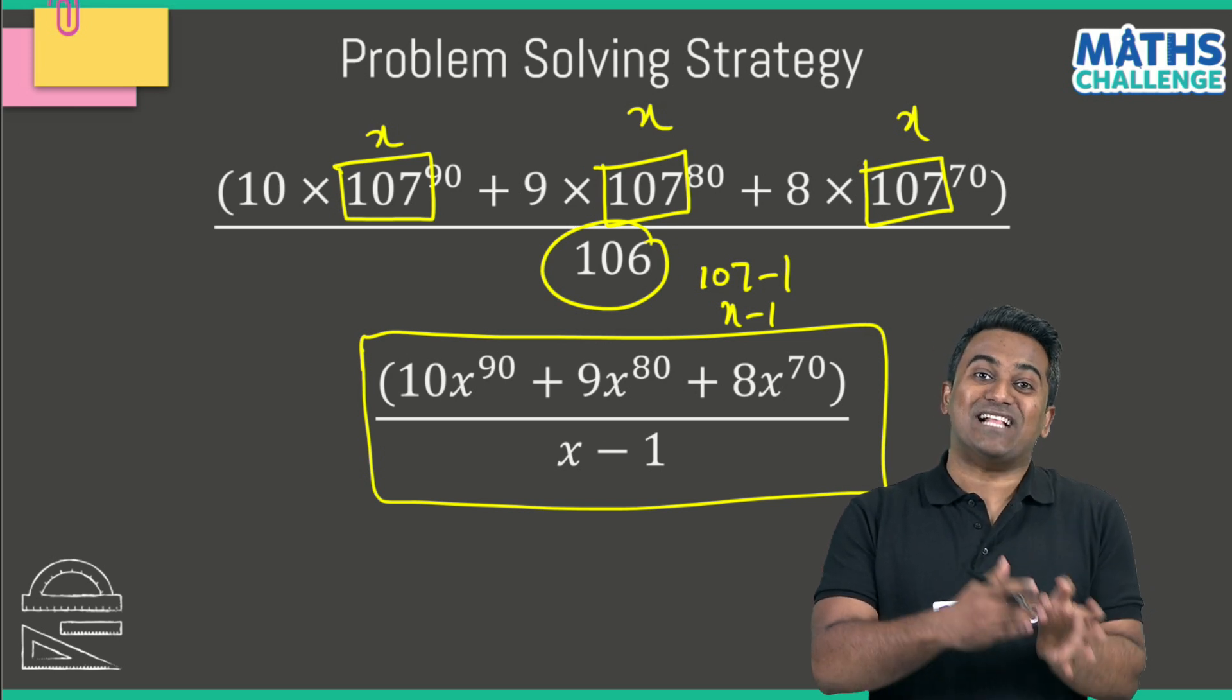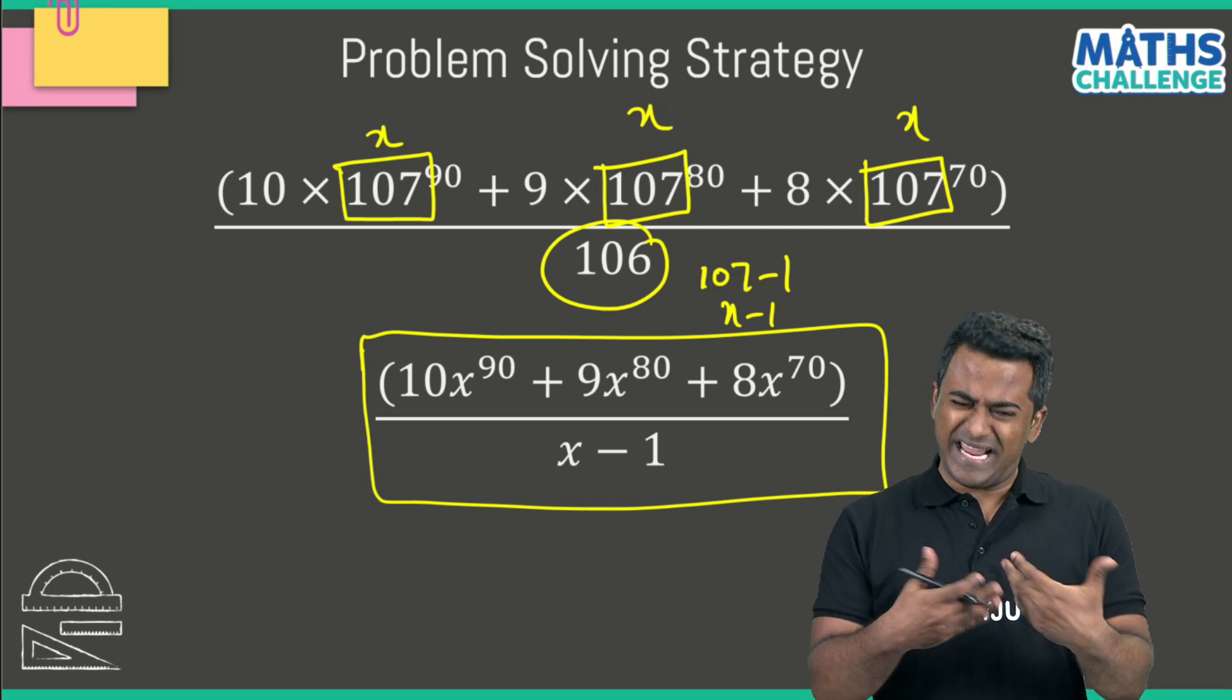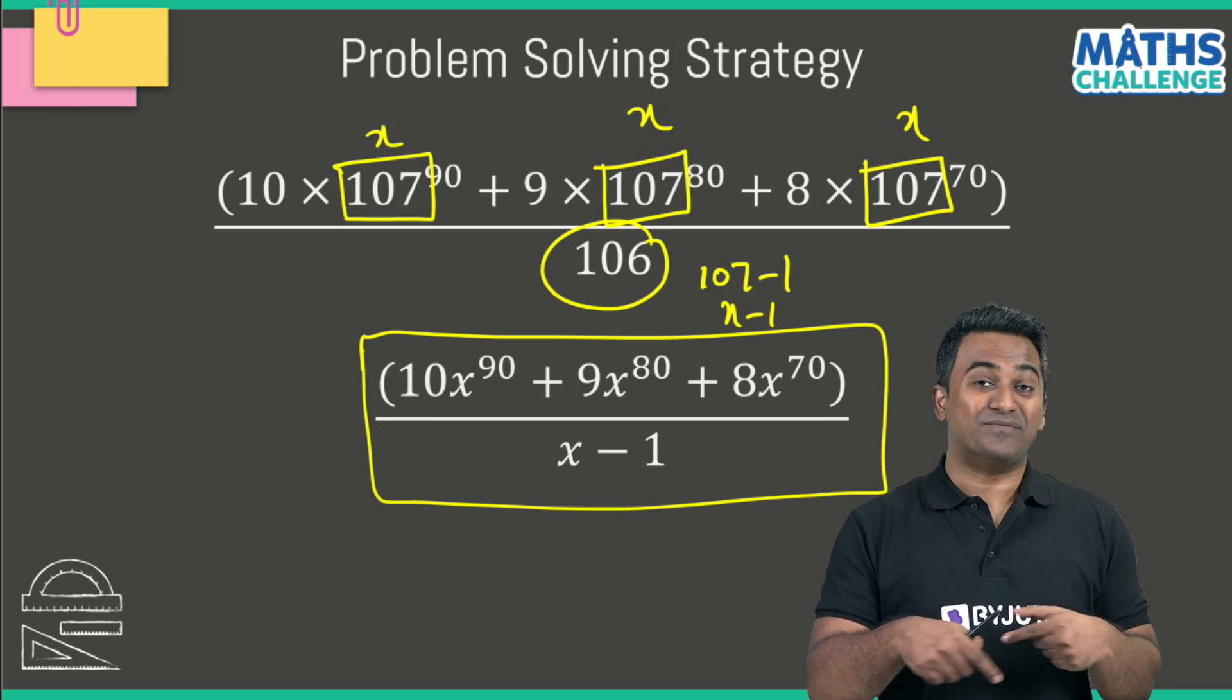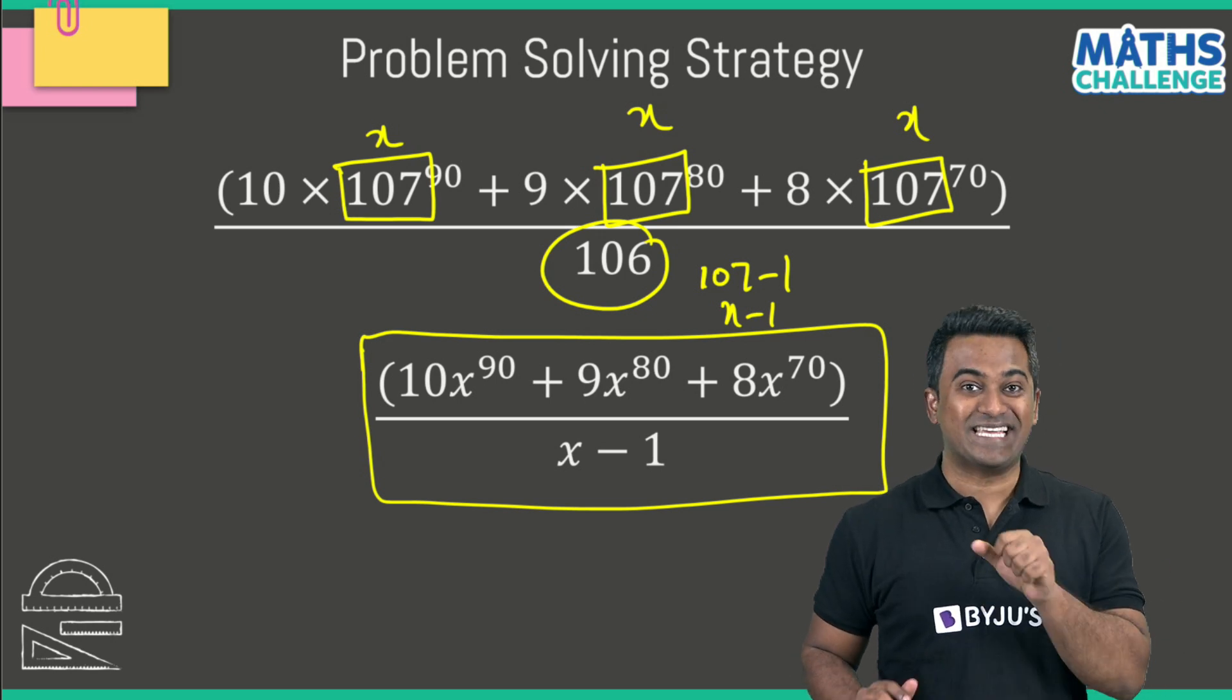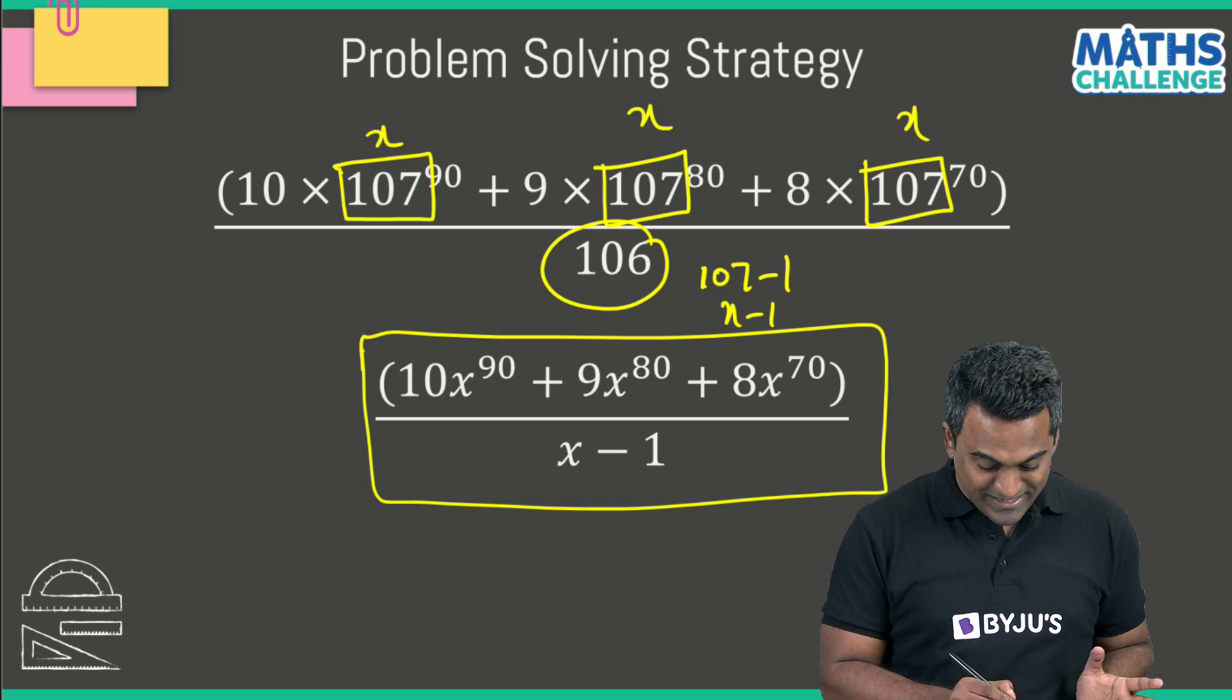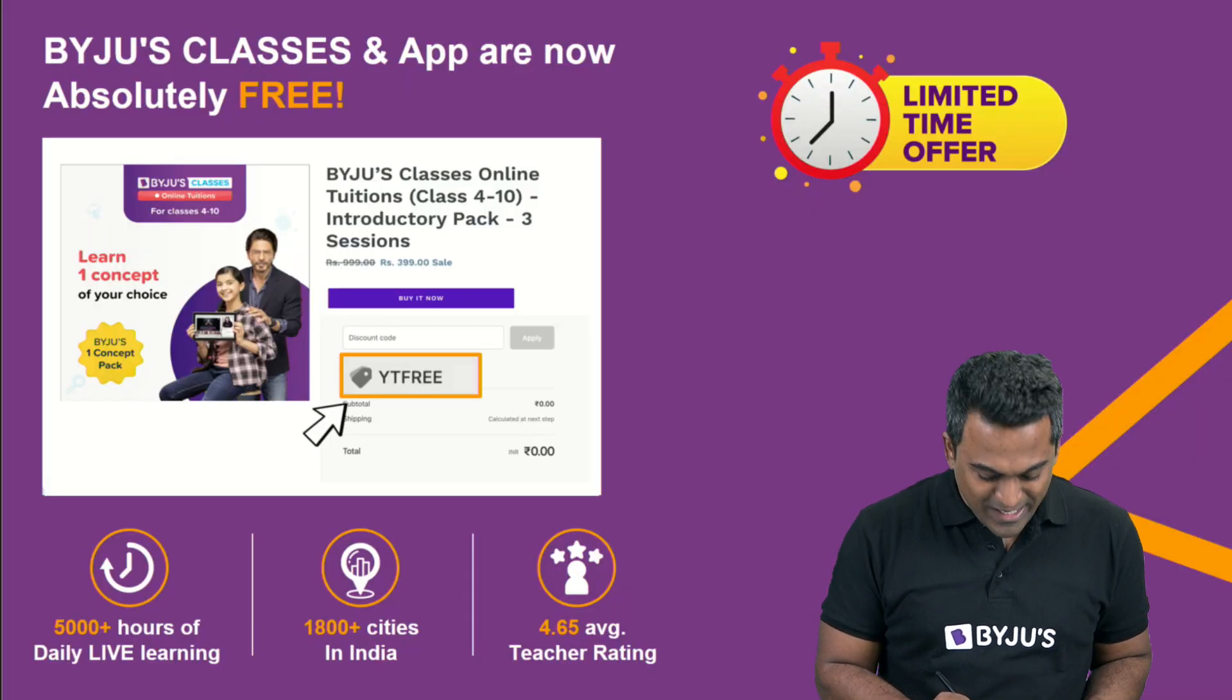You've seen a very good application of the algebraic remainder theorem and how we can convert problems of algebra to problems of numbers. It might look scary, but as long as you're able to check out these fine differences in terms of the numbers and convert it to an algebra problem in terms of x, you should be able to figure out the answer. So the answer to this as well is going to be 27.